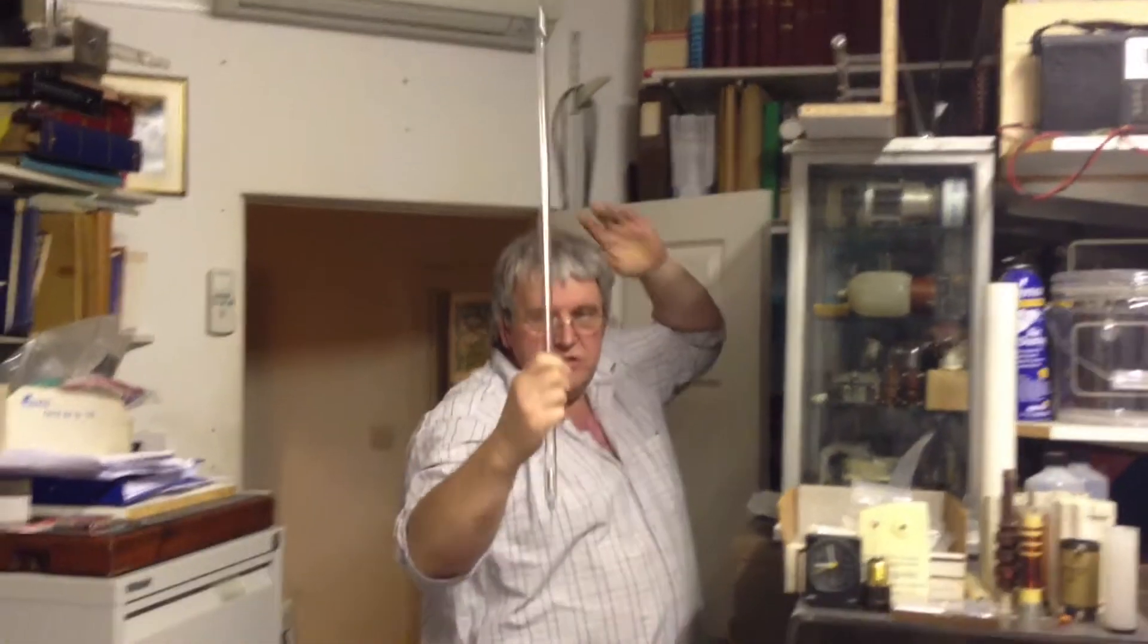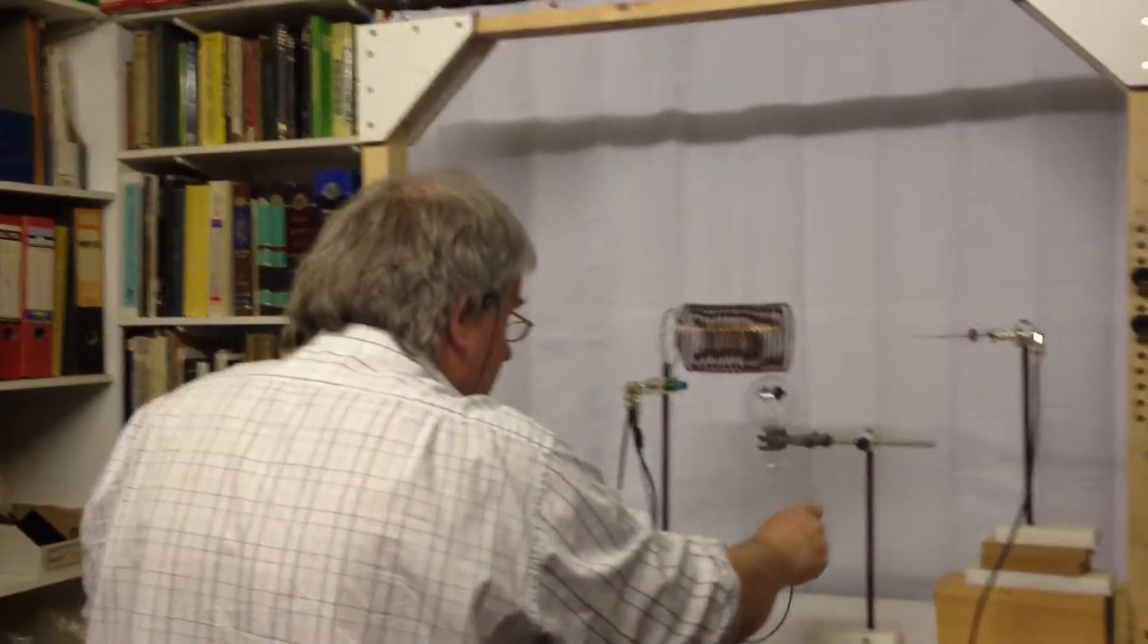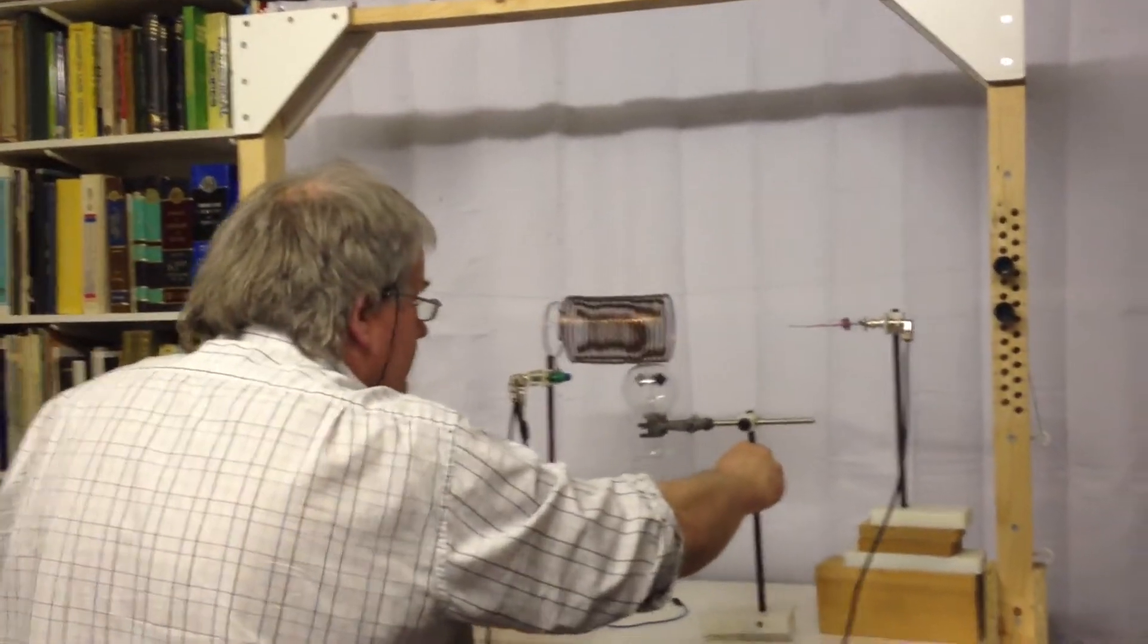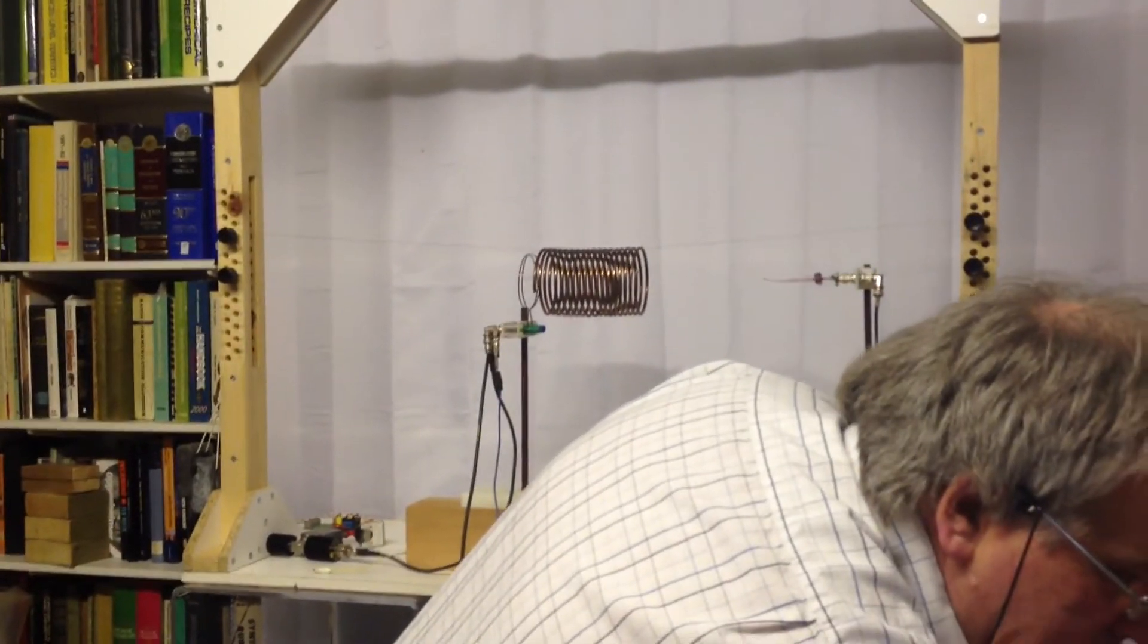One neon signage tube. Right we'll do away with the Crooks radiometer. Take that out of there. Right okay.